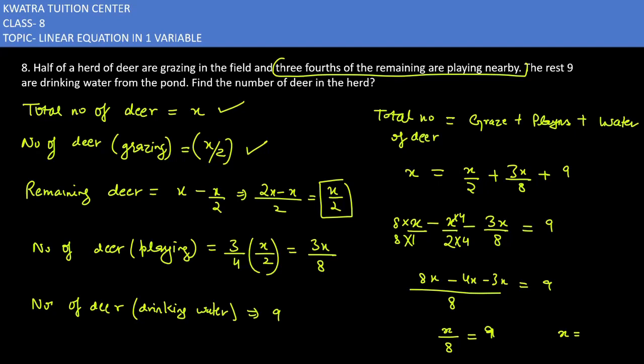The value of x? 9 into 8, and 9 into 8 is 72. The value of x is 72. So that means the number of deer in the herd is 72.